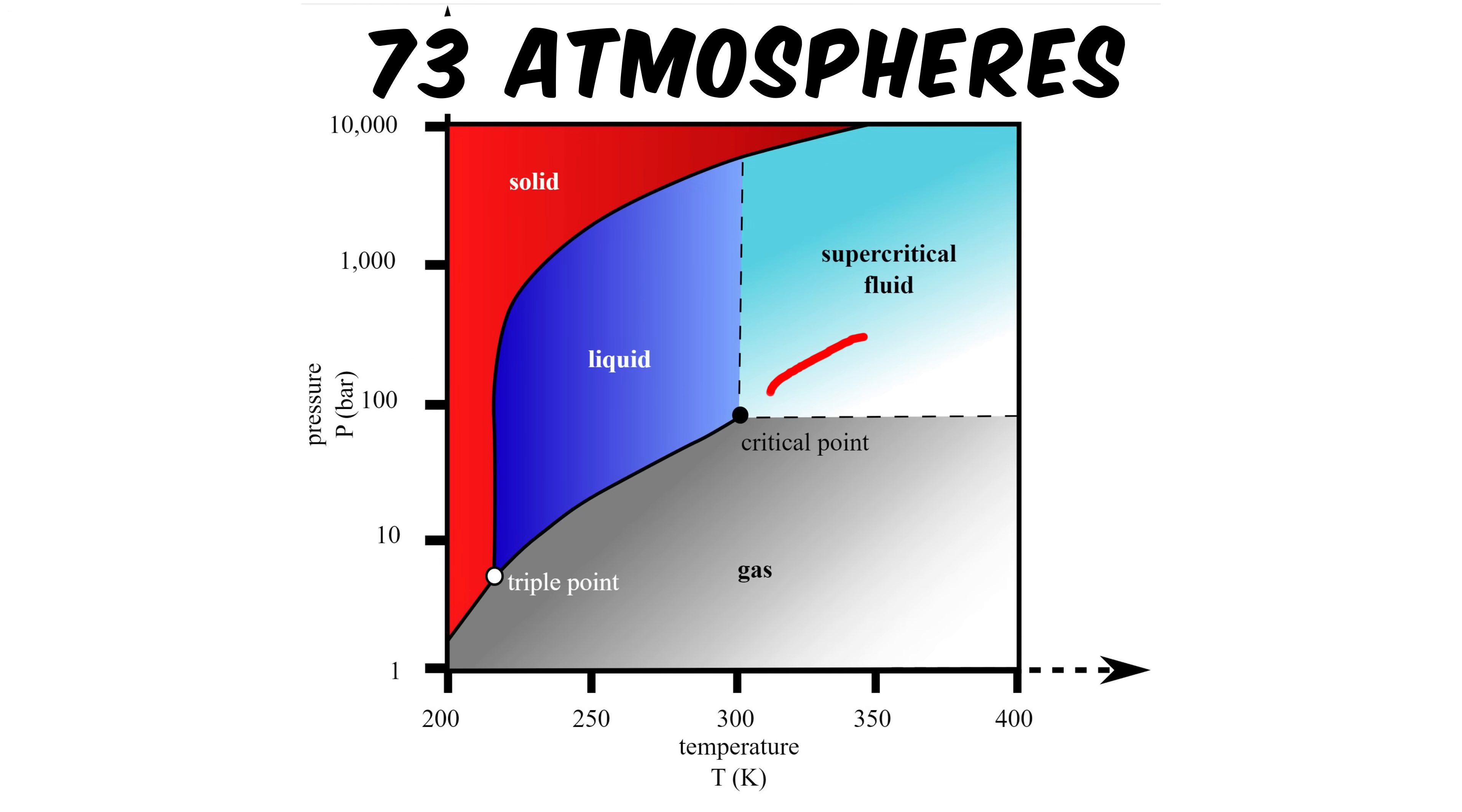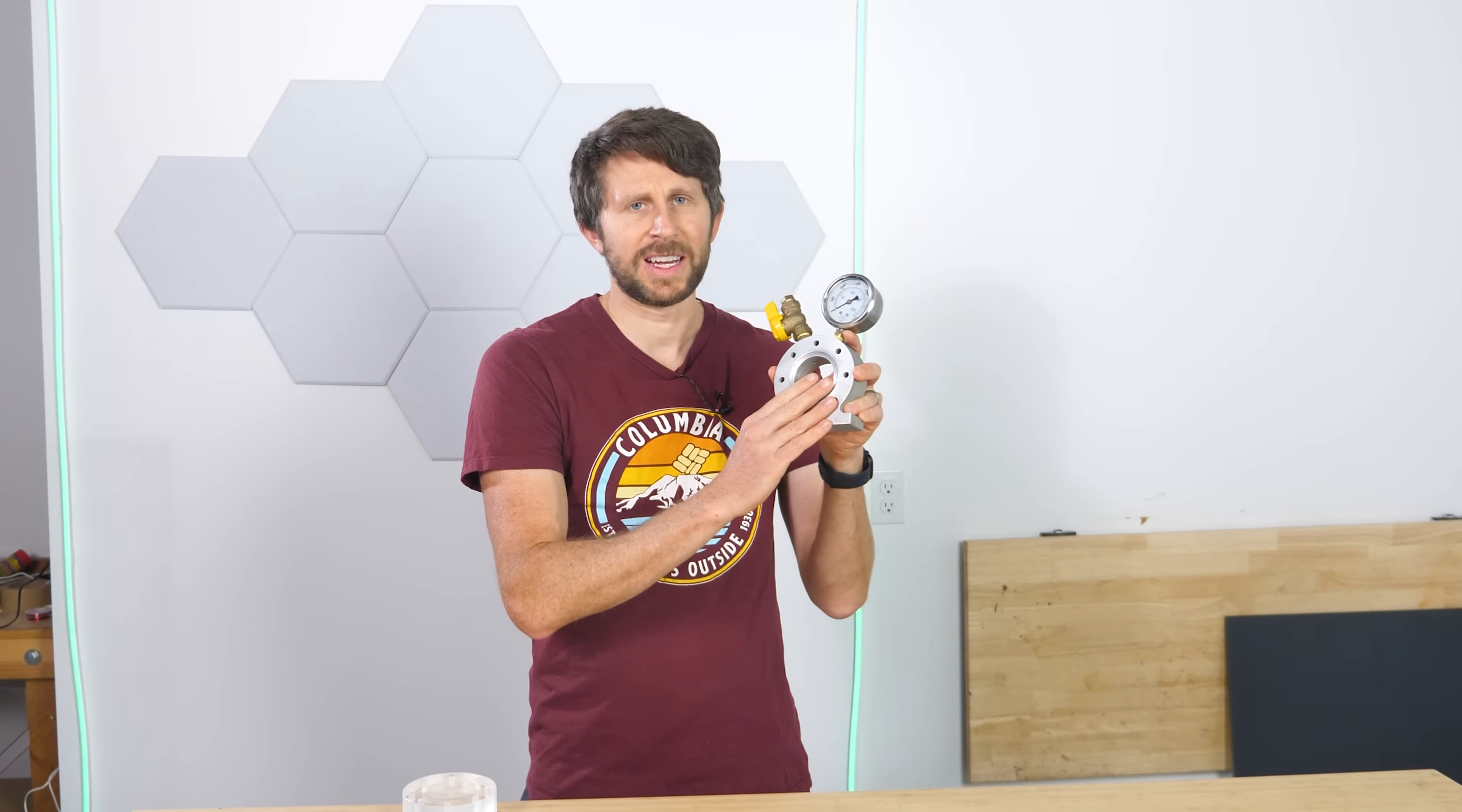In order to do this, I have to contain a lot of pressure. The supercritical point of CO2 is at 73 atmospheres, which means I need to contain over a thousand pounds per square inch in my vessel. So to do that, I'm going to be using this vessel here.